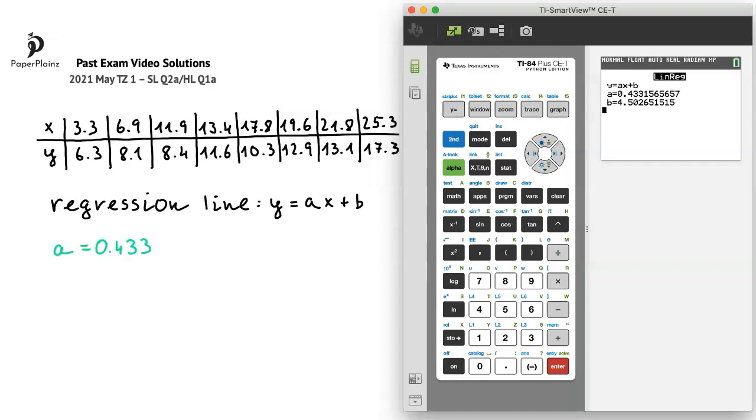For b, the first 3 significant figures are 4, 5, and 0, and since the 4th significant figure is 2, we'll leave the 0 as it is and get that b is equal to 4.50.